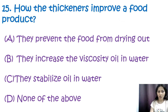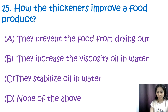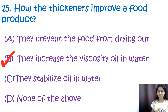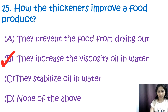Question 15: How do thickeners improve a food product? Options are: they prevent food from drying out; they increase the viscosity of oil and water; they stabilize oil and water; or none of the above. The correct answer is B, they increase the viscosity of oil in water. Food thickeners work by increasing the viscosity of a liquid, making it thicker and resistant to flow. They interact with water molecules in the food, creating a network that traps water and prevents it from flowing freely.